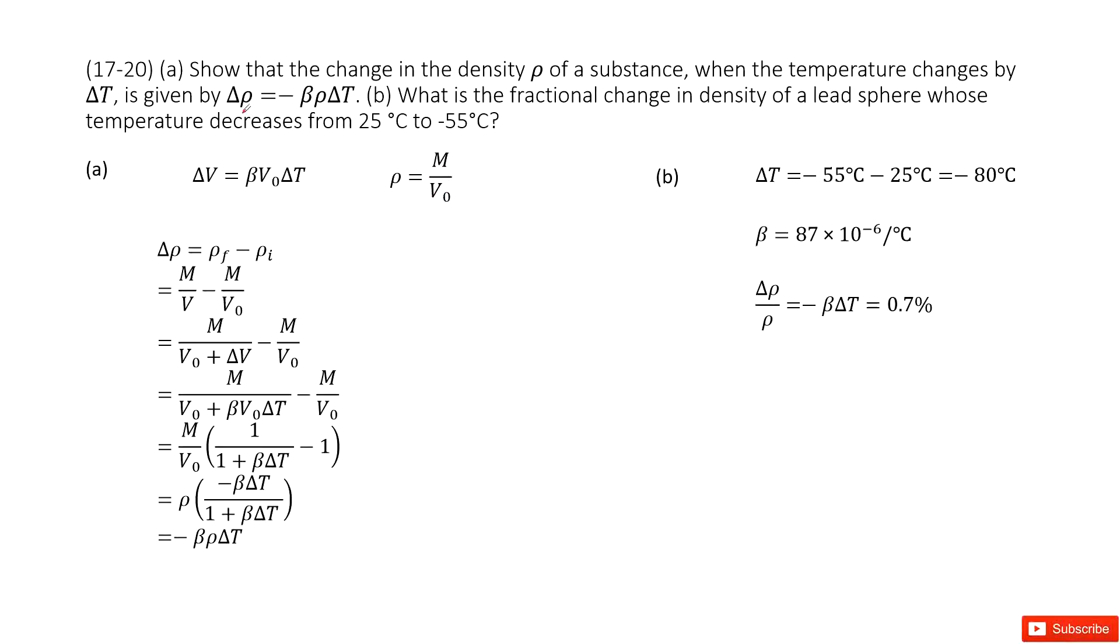Now let's see the change of the density. We use the final density minus initial density. So final density is mass divided by V. Initial density is mass divided by V0. And the mass is constant. Now we can write this V as V0 plus delta V, because the volume changes delta V.